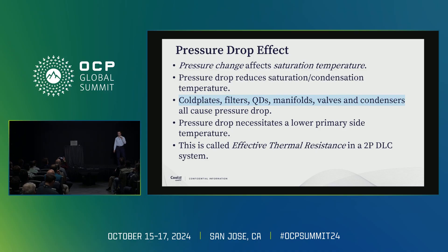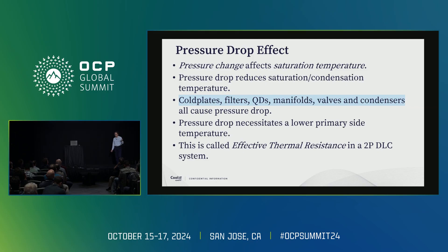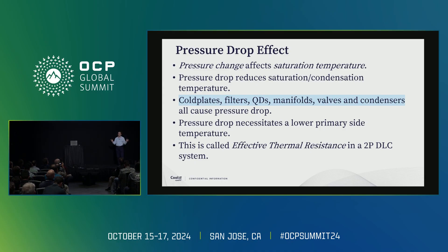One of the most important and most challenging design factors in two-phase systems is pressure drop. Pressure drop is inevitable — you cannot have zero pressure drop. There will be cold plates, quick disconnects, filters, manifolds, and valves, all with pressure drop. In two-phase, the pressure drop affects your saturation temperature and condensation temperature, which reduces the system-level performance compared to single phase. In single phase, if you have a pressure drop, you just need a higher pump to recover it. But in two-phase, pressure drop is tied directly to the saturation temperature, and that has a very important effect.